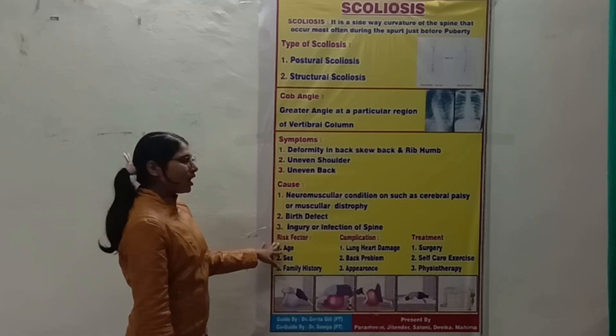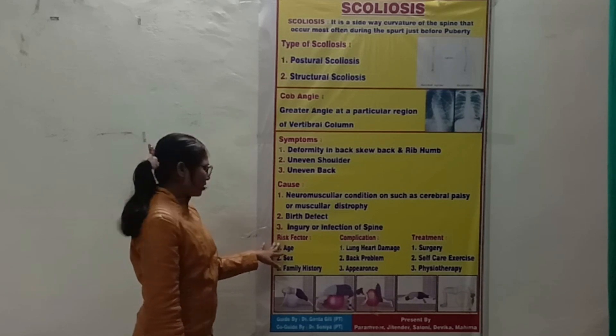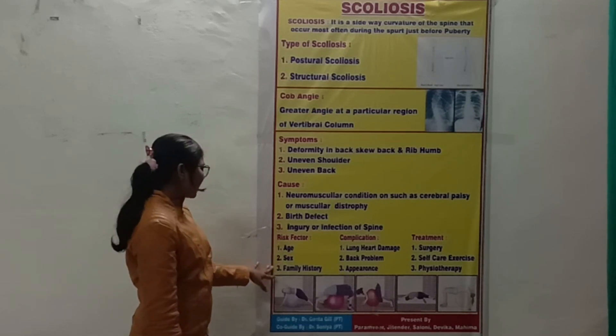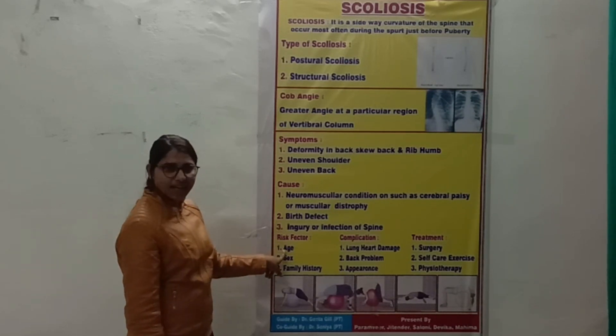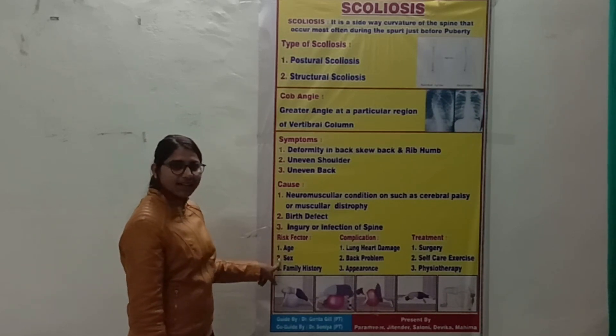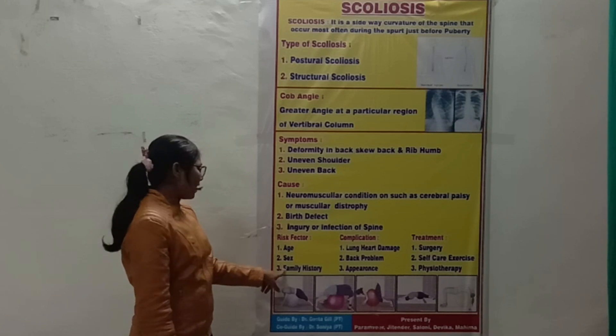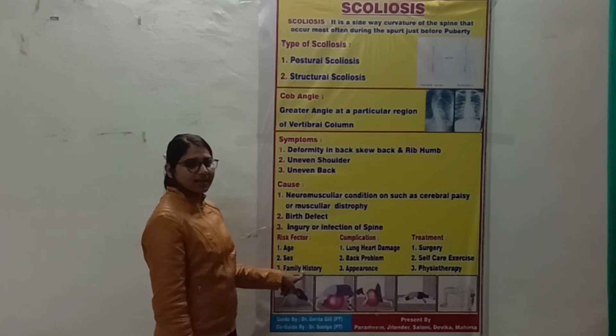Now let's come to the risk factors. There are three risk factors: first is age, second is gender, and third is family history.